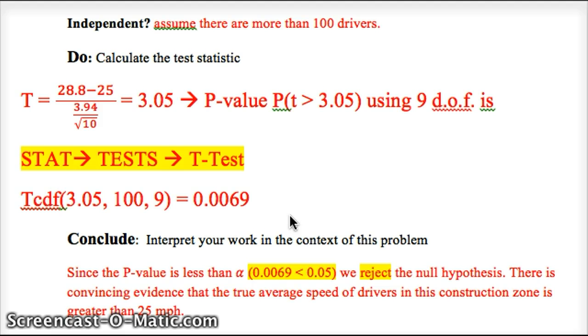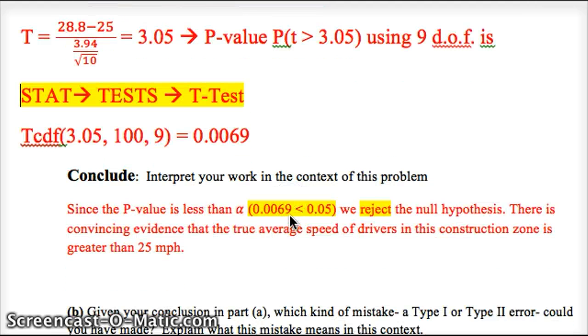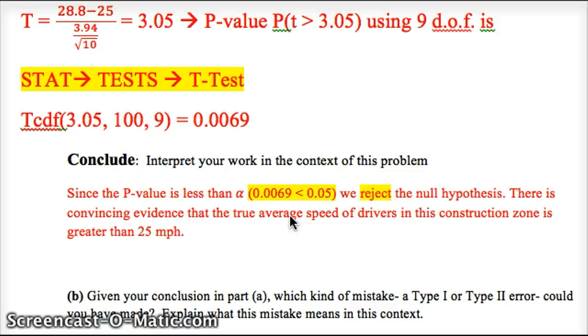Now, you've seen the work there. Your multiple choice question is going to be, given our conclusion here, what kind of mistake a type 1 or type 2 error could we have made?